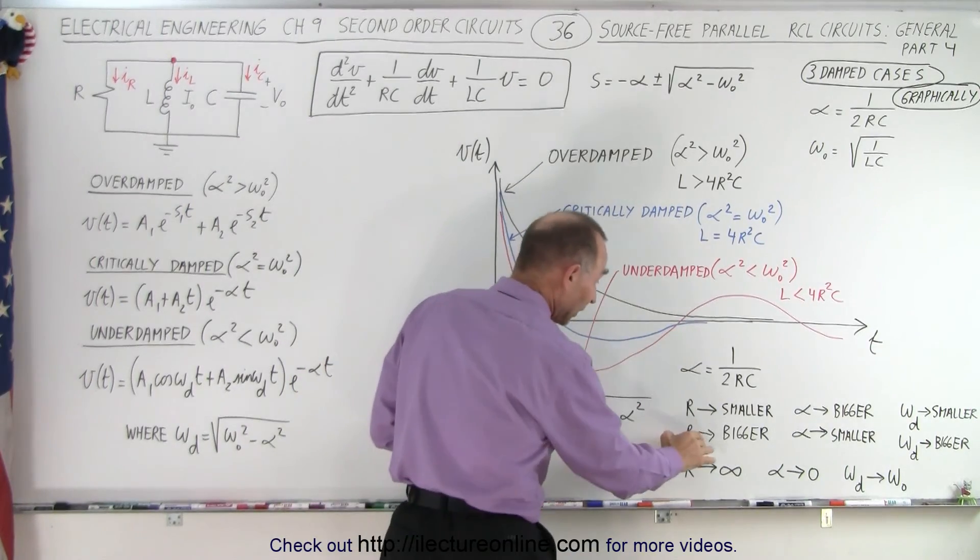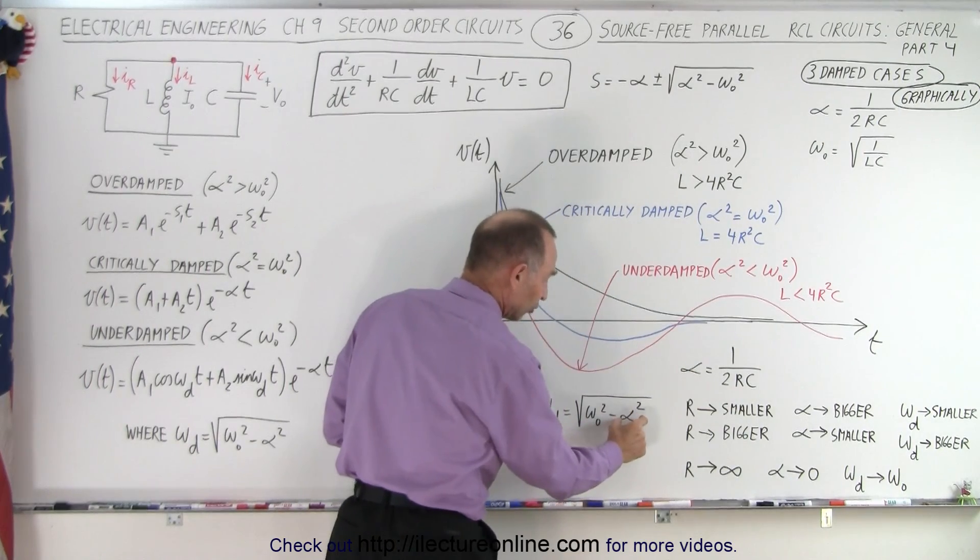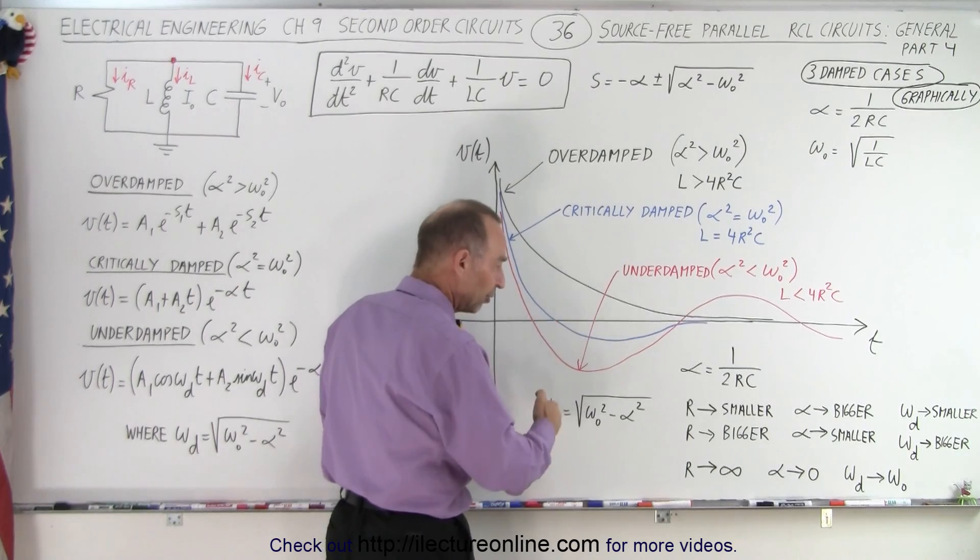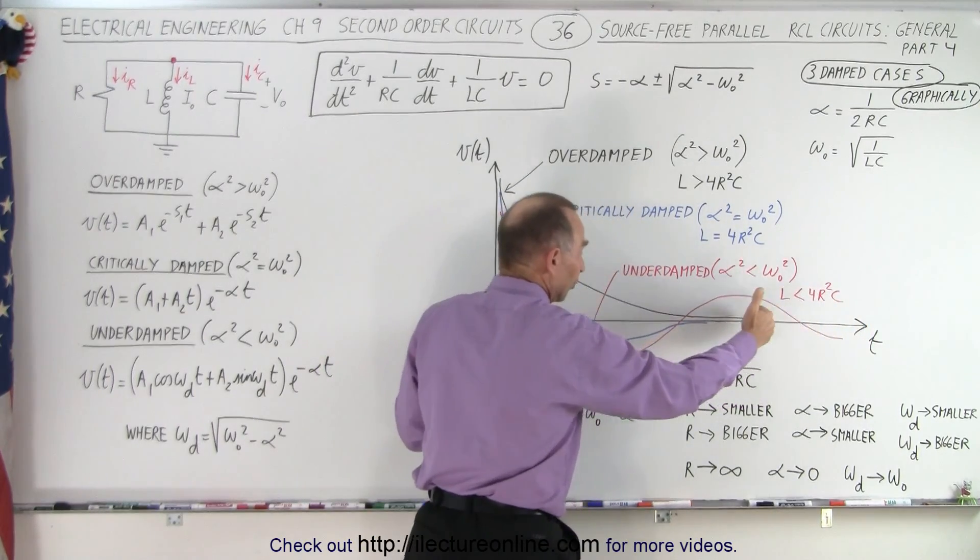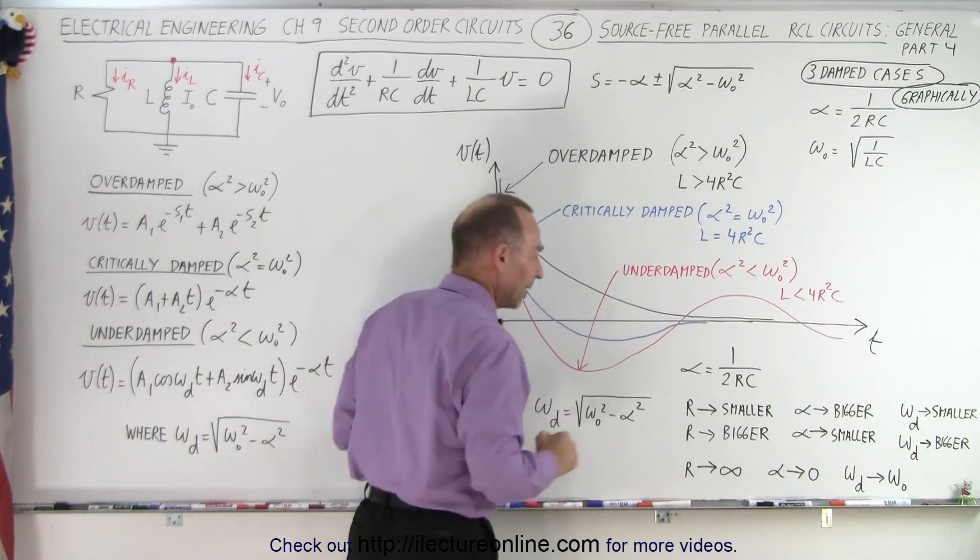Now, if R becomes bigger, a bigger R means that this will become smaller. You'll be subtracting a smaller number, and so the damped oscillation frequency will start increasing. That will cause the red curve to scrunch up, and you'll have more and more oscillations in a given amount of time.